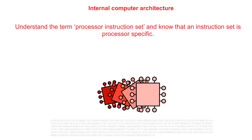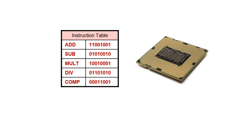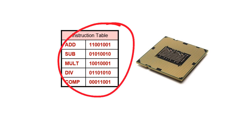At the core of all computers is its instruction set. This is the complete set of all instructions written in machine code that are recognisable and thus executable by a particular central processing unit or CPU. Different CPU designs and thus different computer systems will have a different core instruction set. Broadly speaking, all instruction sets can be thought of as falling into two main categories.